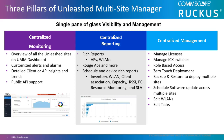SLA reports can be scheduled to run at specific times and are available for up to 30 days. Central management features allow you to manage licenses, manage ICX switches, perform zero-touch deployment to quickly configure a new Unleashed network, set up role-based access, and backup and restore configurations to deploy multiple sites.